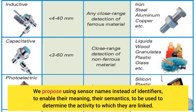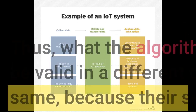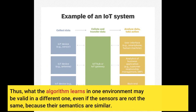We propose using sensor names instead of identifiers, to enable their meaning — their semantics — to be used to determine the activity to which they are linked. Thus, what the algorithm learns in one environment may be valid in a different one, even if the sensors are not the same, because their semantics are similar.